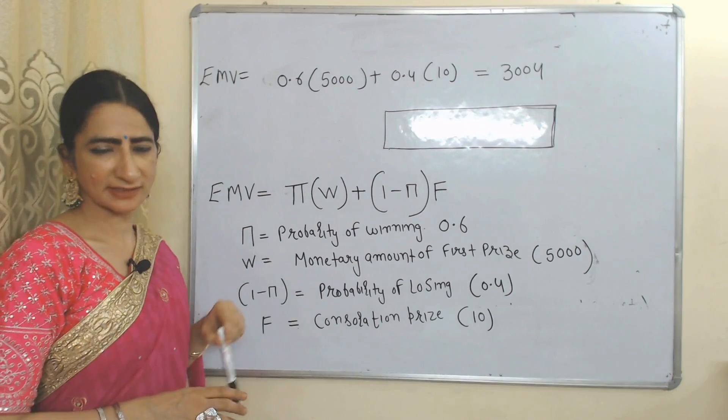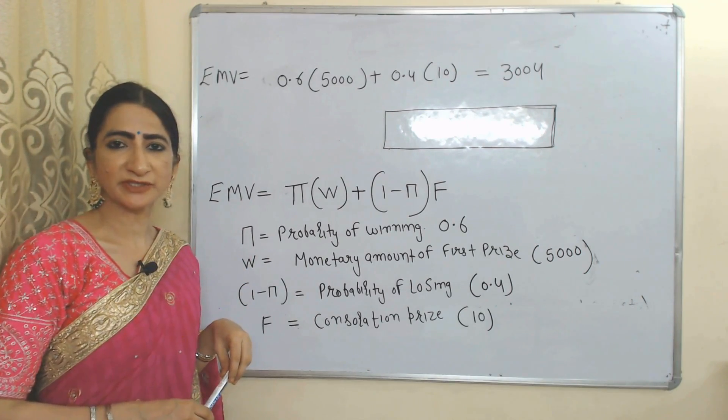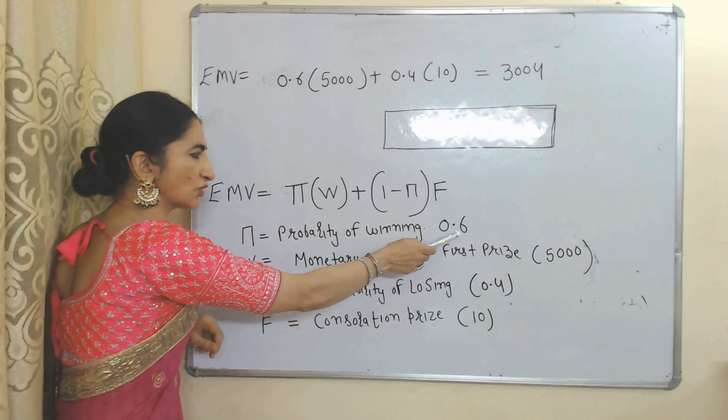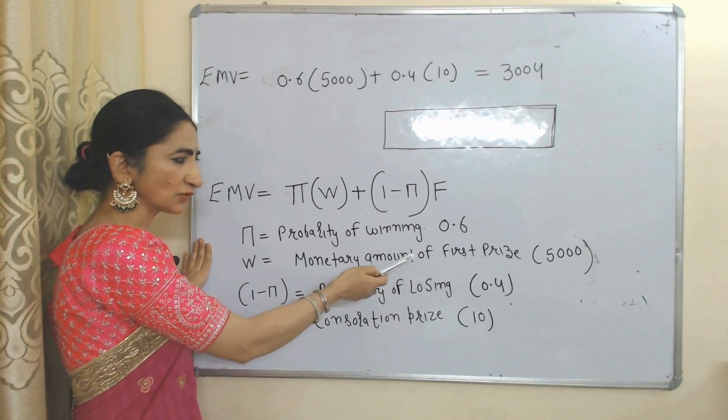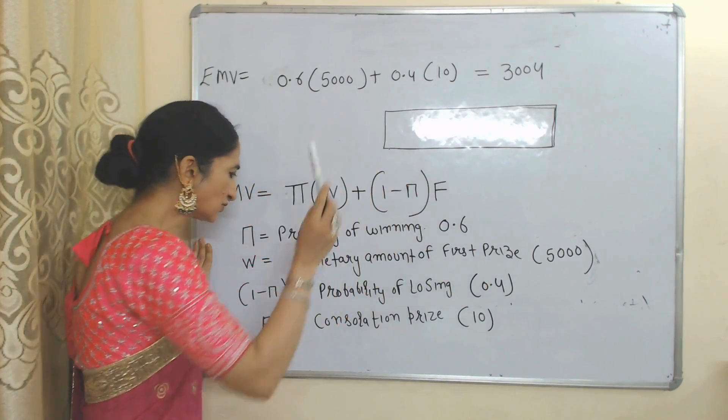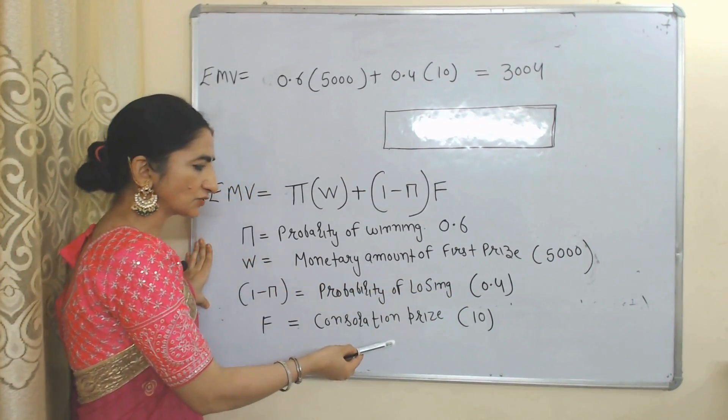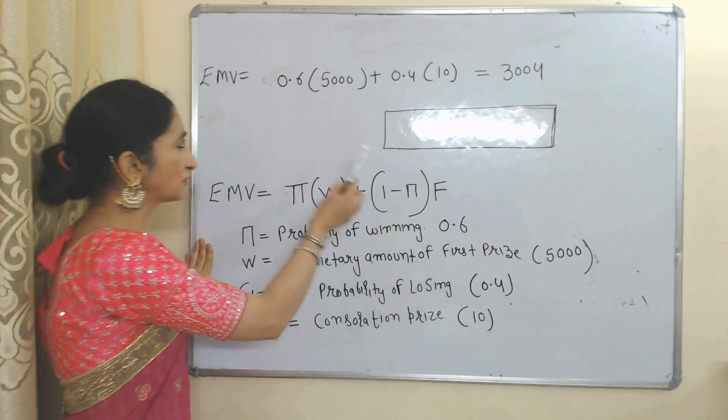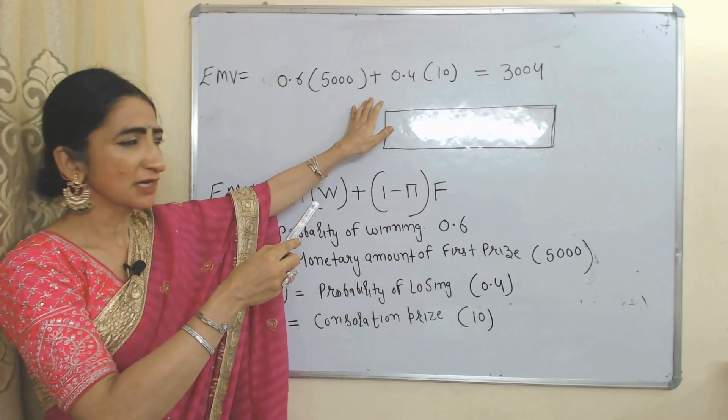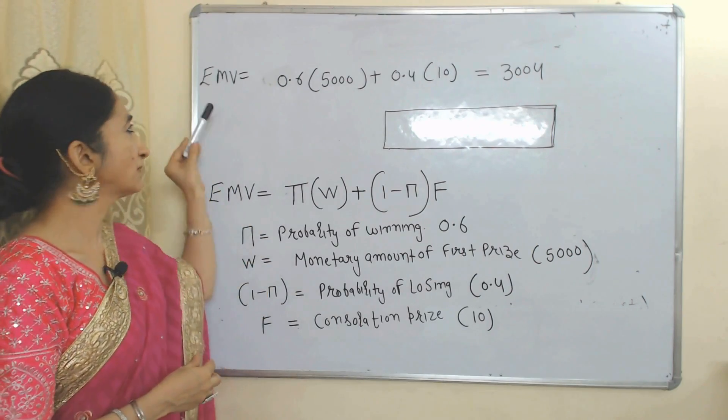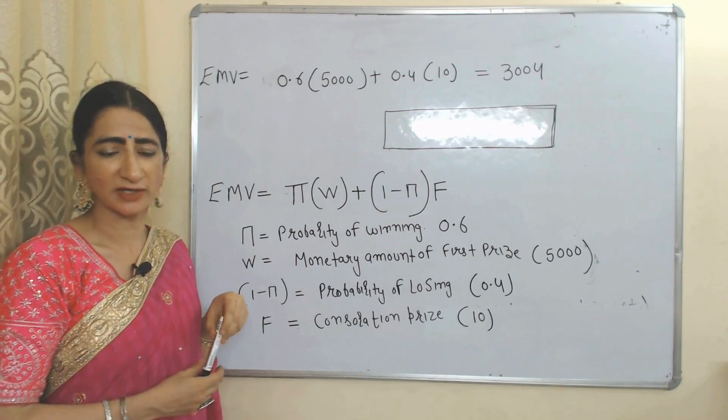Now we'll see one example. Suppose you purchase lottery tickets and the probability of winning is equal to 0.6. Monetary amount of first prize is equal to 5,000 rupees. Probability of losing is equal to 0.4 and consolation prize is equal to 10 rupees. We will put all these values and the answer will become equal to 3,004 rupees. This 3,004 will be called expected monetary value.